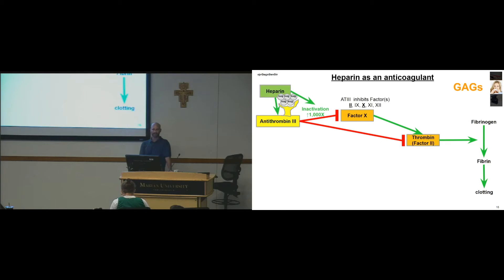And heparin, which is modified with these sugars, binds antithrombin 3 and increases its blocking activity a thousandfold. So this is how heparin can block clotting because of that modification, the carbohydrate added on.